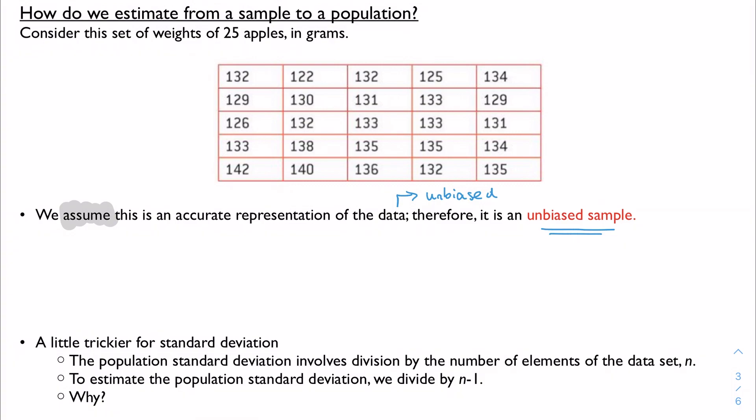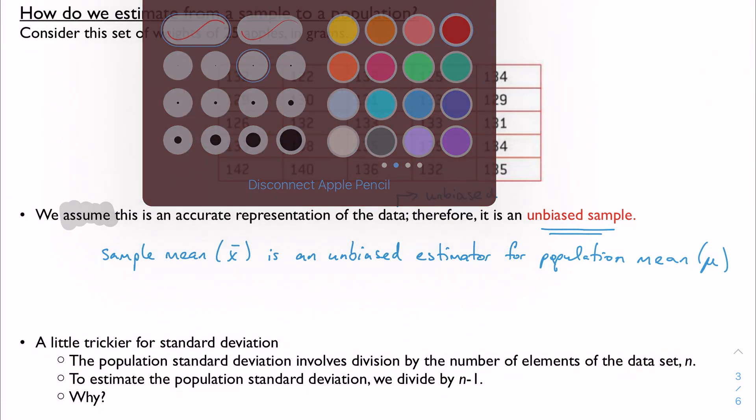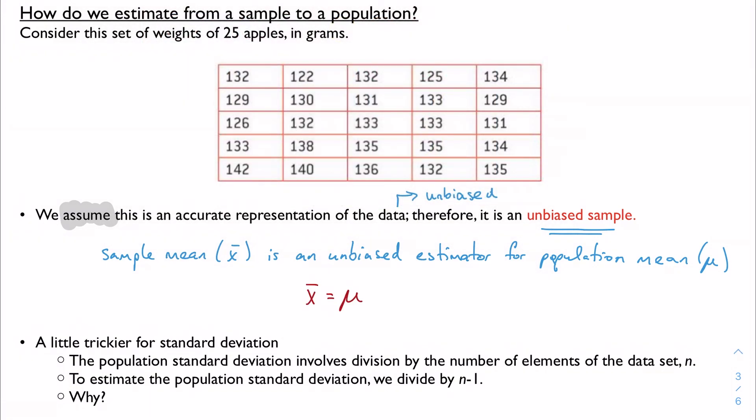Because we're going to assume that this is an accurate representation of the data, this is kind of where statistics starts to get a little gray area, a little bit weird. But we're going to assume that because this is an unbiased sample, then our sample mean, which is x bar, is what we call an unbiased estimator for the population mean, which is mu. So the important thing is that x bar is basically equal to mu.